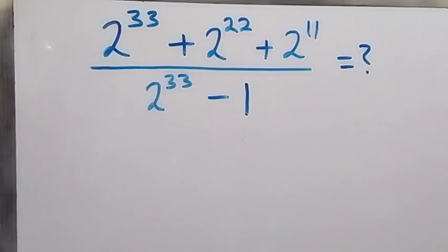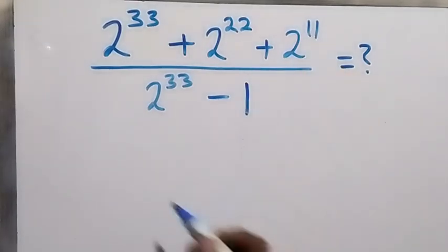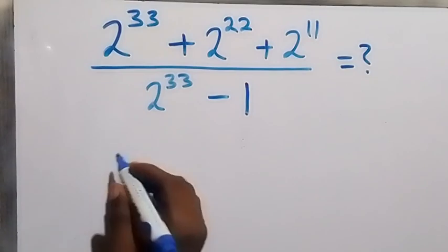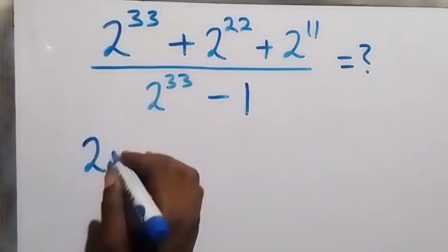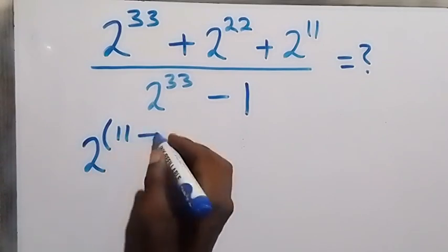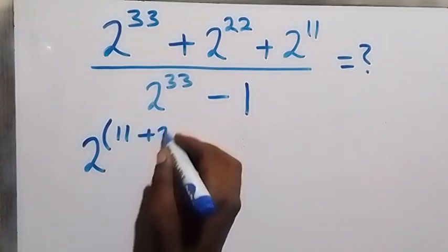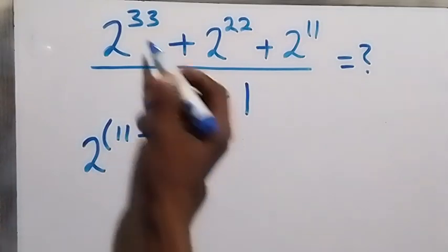Hello, you are welcome. How to simplify this nice math problem. From here, let's make 2 raised to power 11 common, and then we can write this again as 2 raised to power 11 plus 22 for this side.